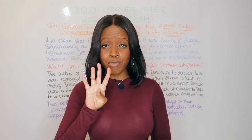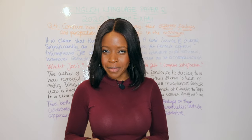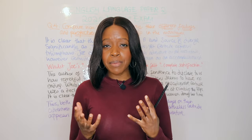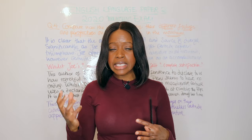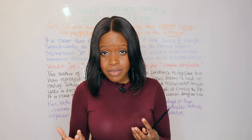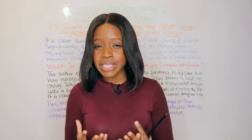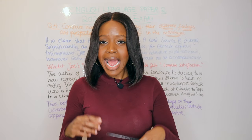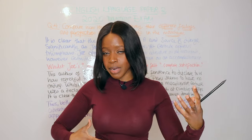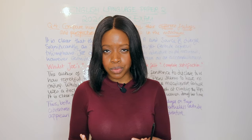Let's discuss how to answer question number four of the English Language Paper 2 exam. For this question, you have to compare both source A and source B, talking about either differences or similarities in writers' ideas and perspectives. Within this question, you also need to discuss the methods that both writers use, so you want to use a mix of language and structural techniques to support how the writers convey the similarities or differences in ideas and perspectives on a given issue.